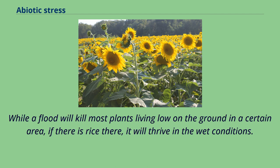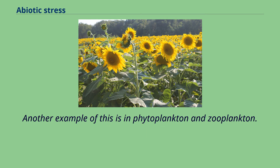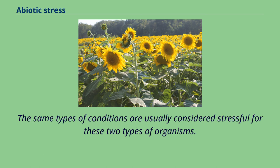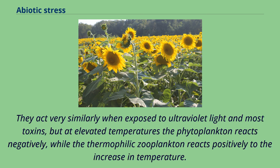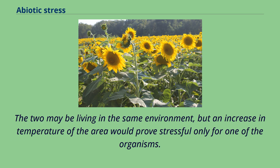While a flood will kill most plants living low on the ground in a certain area, if there is rice there, it will thrive in the wet conditions. Another example is phytoplankton and zooplankton — the same conditions are usually considered stressful for both, and they act very similarly when exposed to ultraviolet light and most toxins. But at elevated temperatures, the phytoplankton reacts negatively while the thermophilic zooplankton reacts positively. The two may be living in the same environment, but an increase in temperature would prove stressful only for one of the organisms.